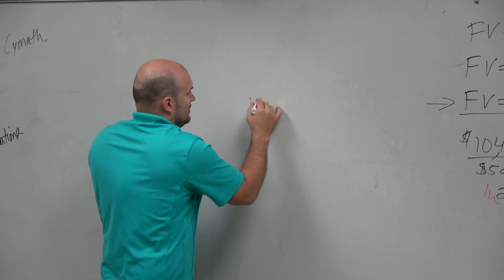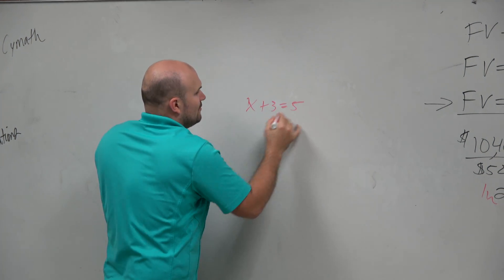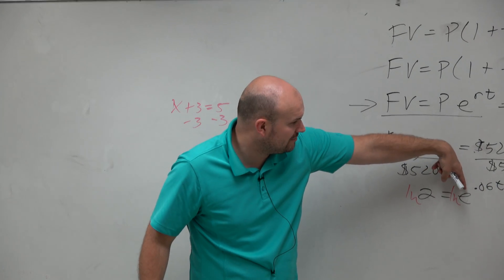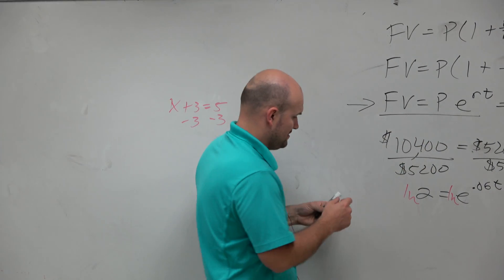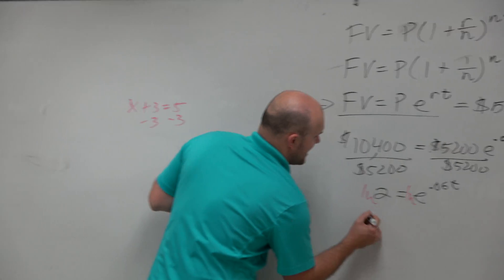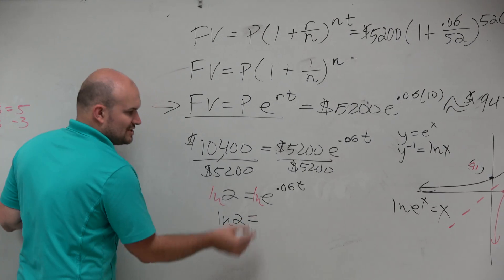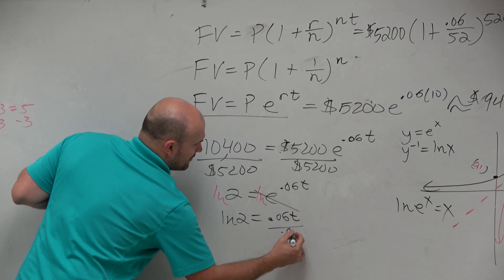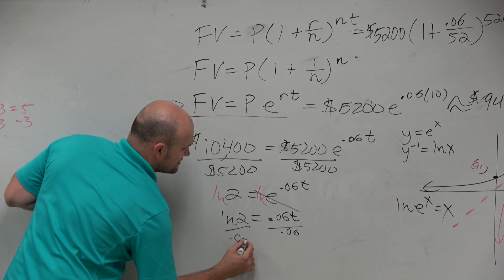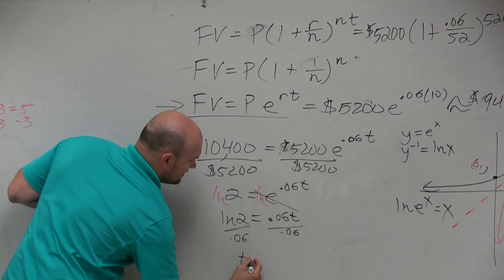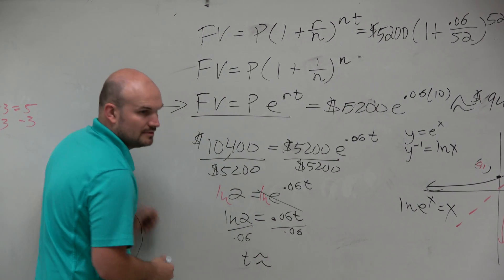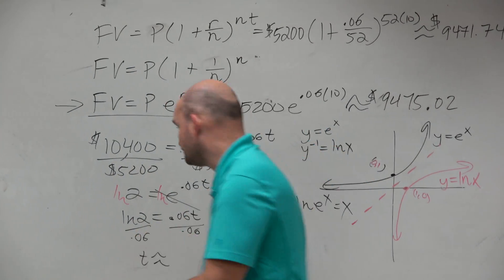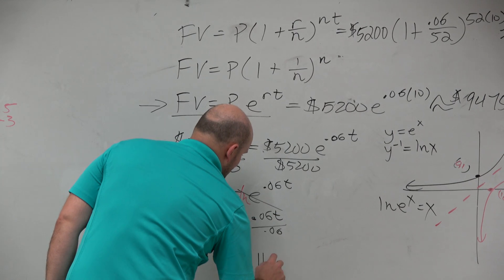Remember that equation? Like x plus 3 equals 5. Whatever you do on one side, you have to do on the other side. If you're going to take the ln on the right side, you've got to take ln on the left side. So we have the ln of 2 is equal to ln of e gives you 0.06t. Divide by 0.06, divide by 0.06.